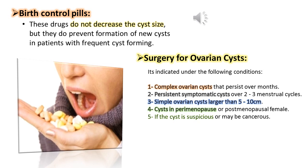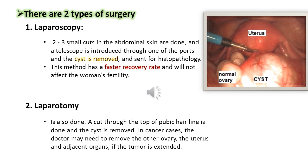Surgery for ovarian cysts is indicated under the following conditions: complex ovarian cysts that persist over months, persistent symptomatic cysts over two to three menstrual cycles, simple ovarian cysts larger than 5 to 10 centimeters, cysts in perimenopausal or postmenopausal females, or if the cyst is suspicious or potentially cancerous. Laparoscopy involves two to three small incisions in the abdominal skin; a telescope is introduced through one of the ports and the cyst is removed and sent for histopathology. This method has a faster recovery rate and does not affect the woman's fertility.